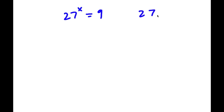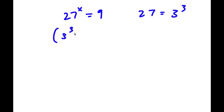27 is the same thing as 3 to the power of 3. So what I'm going to do is substitute 3 to the power of 3 in for 27. So now I have 3 to the power of 3, to the power of x, is equal to 9.